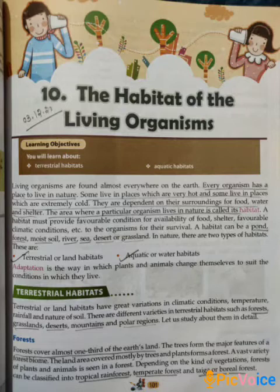First one is forest. Forests cover almost one third of the earth's land. A vast variety of plants and animals is seen in a forest. Depending on the kind of vegetation, forests can be classified into three types: tropical rainforests, temperate forest, and taiga or boreal forest.